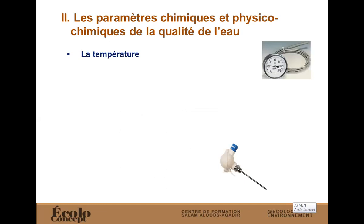Le premier paramètre à aborder quand on parle de la qualité de l'eau, c'est la température. Quand on dit la qualité de l'eau, ça veut dire que vous avez des rejets industriels qui seront rejetés dans la nature, généralement dans les cours d'eau. C'est pourquoi on parle de la qualité de l'eau de surface. Pour rejeter ces effluents dans les eaux de surface, il faut respecter certains paramètres, sinon vous allez perturber la qualité de vie des êtres vivants dans ce milieu de destination. La température joue un rôle très important dans la solubilité de certains sels et de certains gaz dans l'eau, notamment l'oxygène.